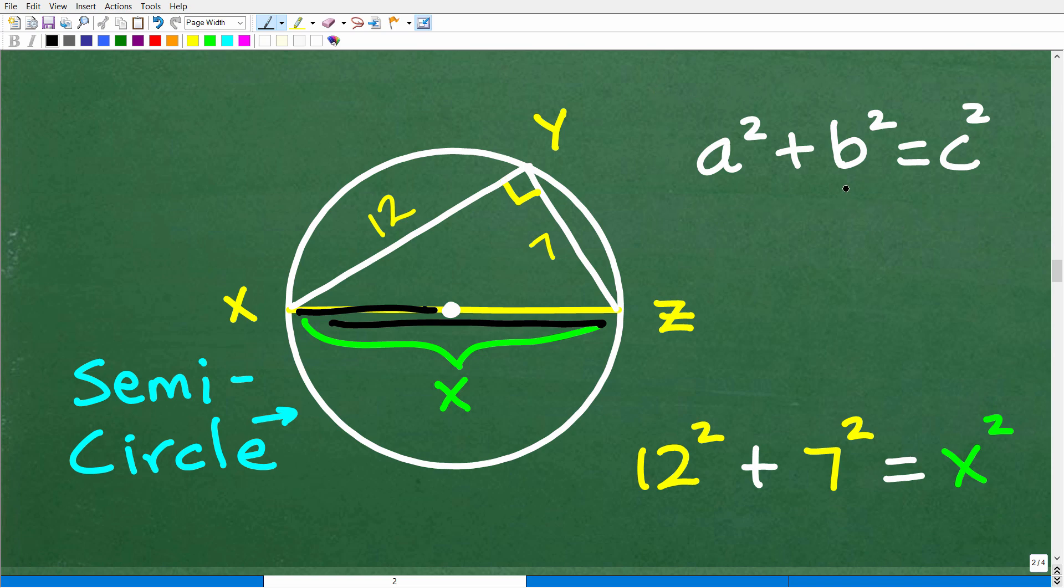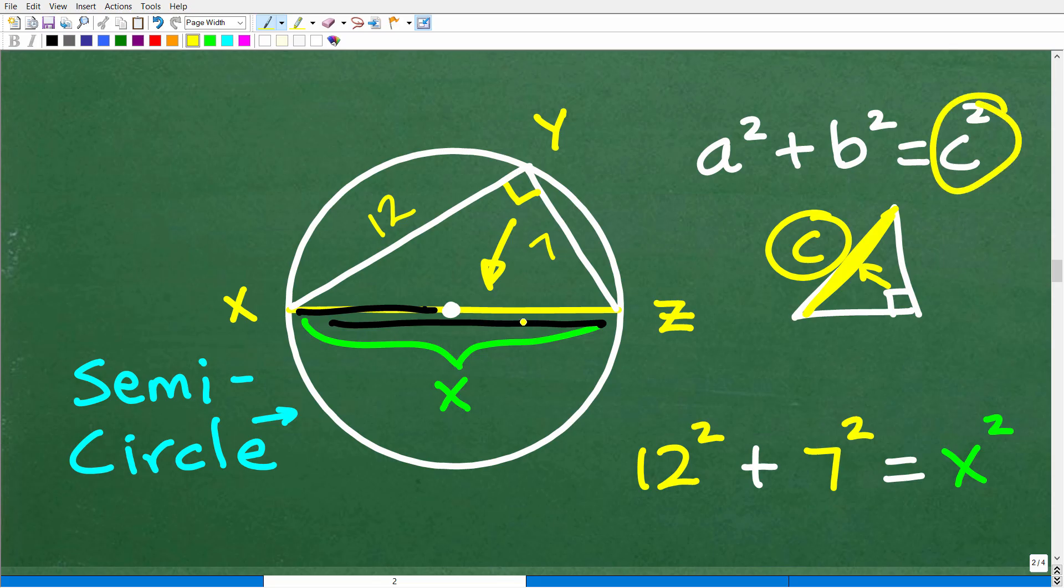We have to break out the Pythagorean theorem. A squared plus B squared equals C squared. Here is our right triangle. The longest side of a right triangle is C, which is called the hypotenuse, and it's always opposite of that 90-degree angle. These two sides, 7 and 12, one could be A, one could be B. It doesn't make a difference. But C is always the hypotenuse.